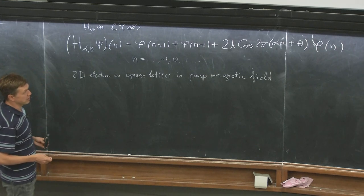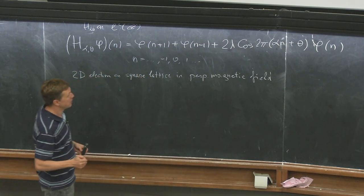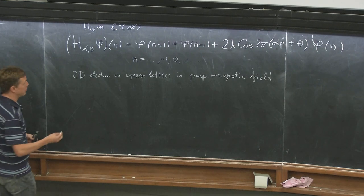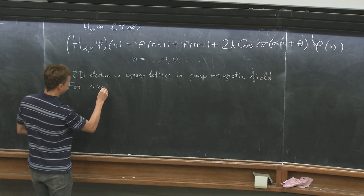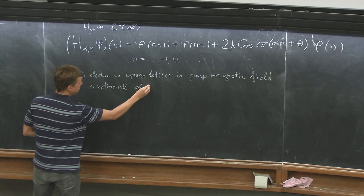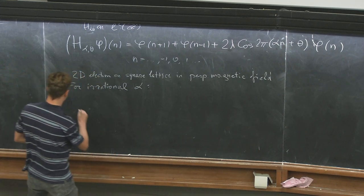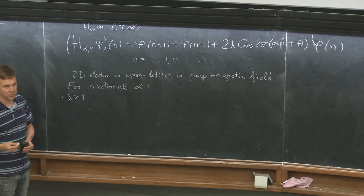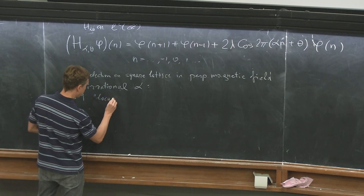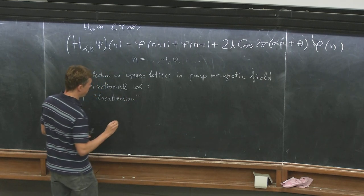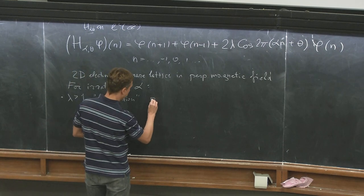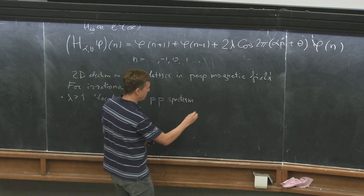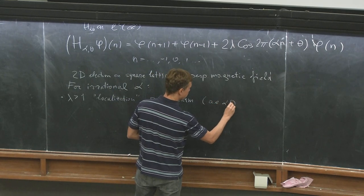This competition between the magnetic field and the lattice leads to interesting phenomena. We ask: what is the spectrum of this operator? For irrational alpha, we have the following cases. If lambda is greater than 1, this corresponds to so-called localization — the spectrum is pure point, with exponentially decreasing eigenfunctions. This is true for almost every alpha and theta, but not all.